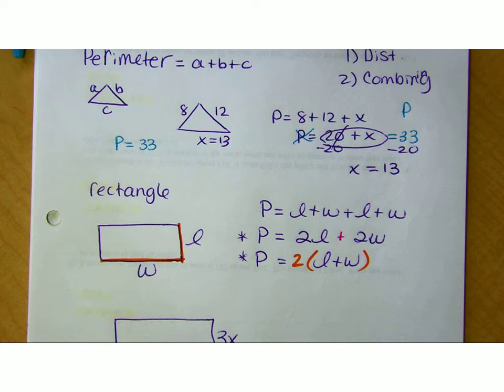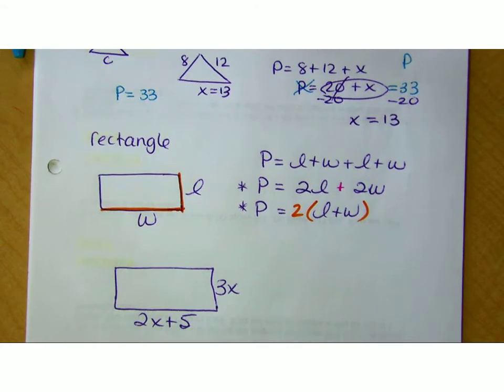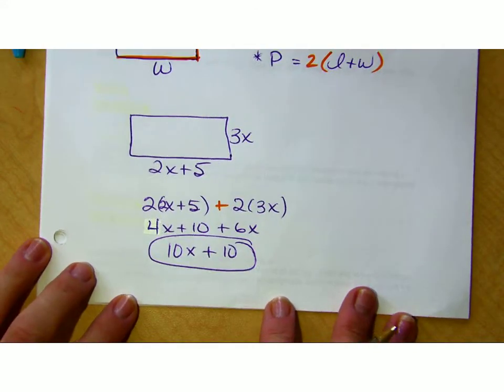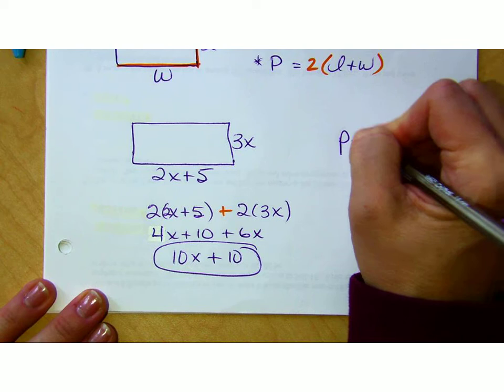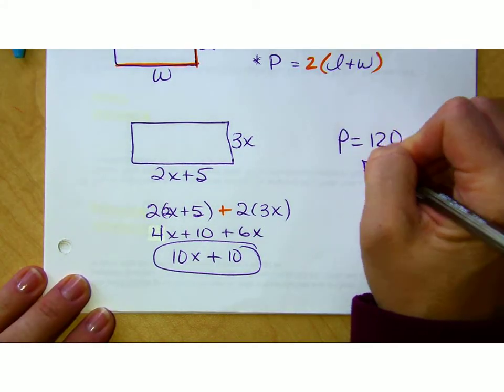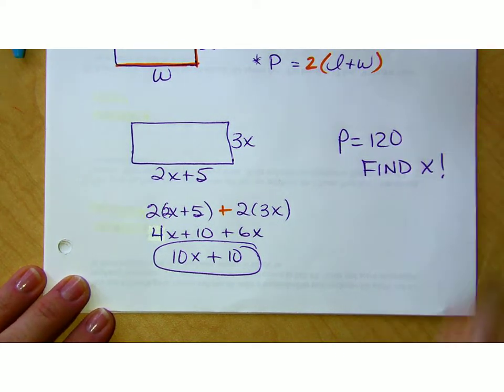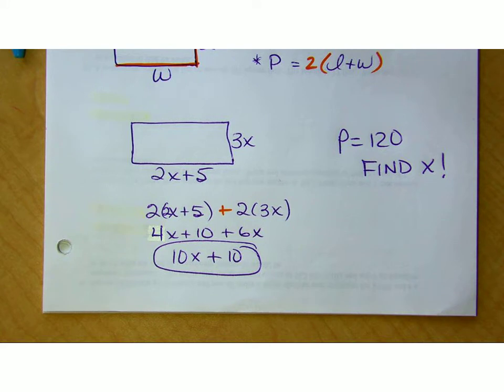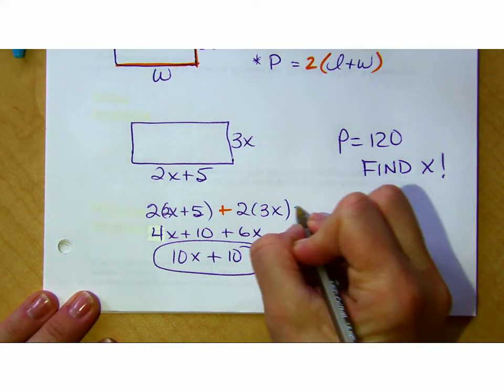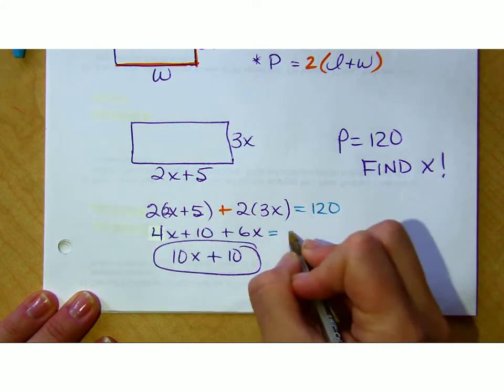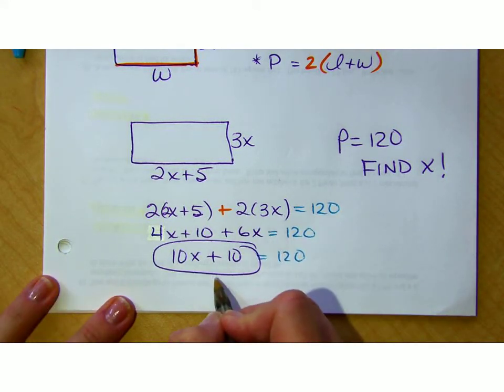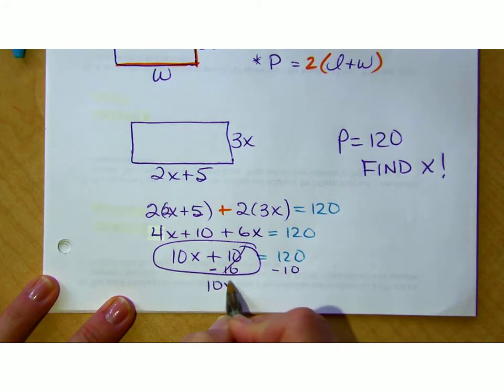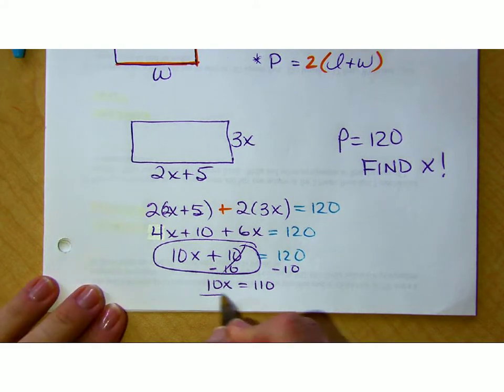If I were to do the same thing down here and say I have a rectangle with side lengths of 3x and 2x plus 5 and the whole perimeter of this rectangle is 120, find x. Don't find the perimeter, I gave it to you. Use the perimeter to find what the value of x is. That means now I take this and set it equal to 120 and I distribute and I combine and I solve. Those three things: distribute, combine, solve. We take it from my multi-step equation down to a two-step equation down to a one-step equation to an answer. The value of x is 11.